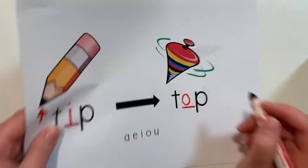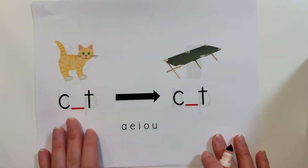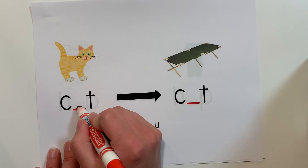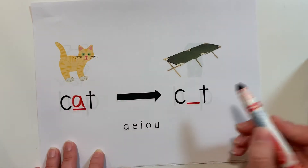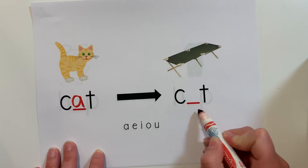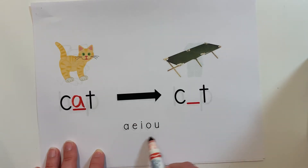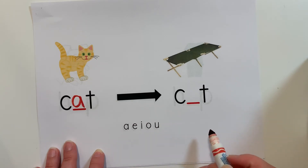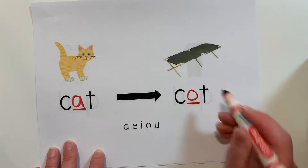Let's try another one. Cat — K-A-T. I hear the AH sound. But I want to change it to caught — K-AW-T. What is my new middle sound? O.